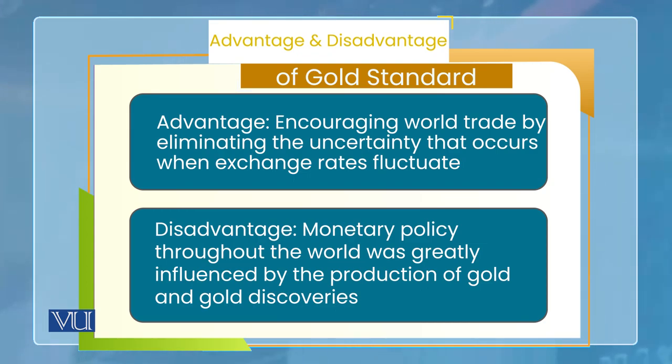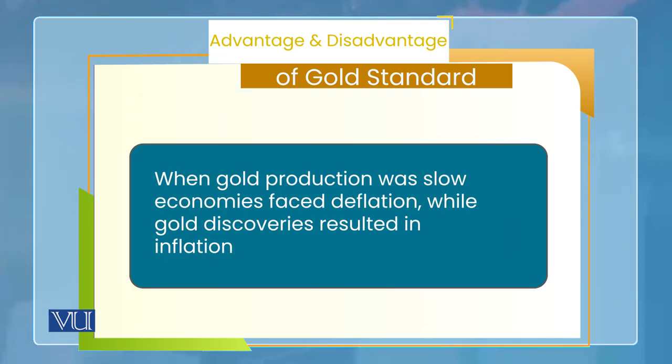لیکن gold standard کا ایک بڑا disadvantage یہ ہے کہ money supply اور resultantly inflation کا rate سارا gold کی availability پر dependent ہو جاتا ہے۔ اگر gold کم available ہو جبکہ world economy expand کر رہی ہو — goods and services بڑھ جائیں لیکن gold constant رہے — تو نتیجہ deflation ہوگا، کیونکہ چیزوں کی قیمت gold کی form میں نکلنی ہے اور gold وہی ہے۔